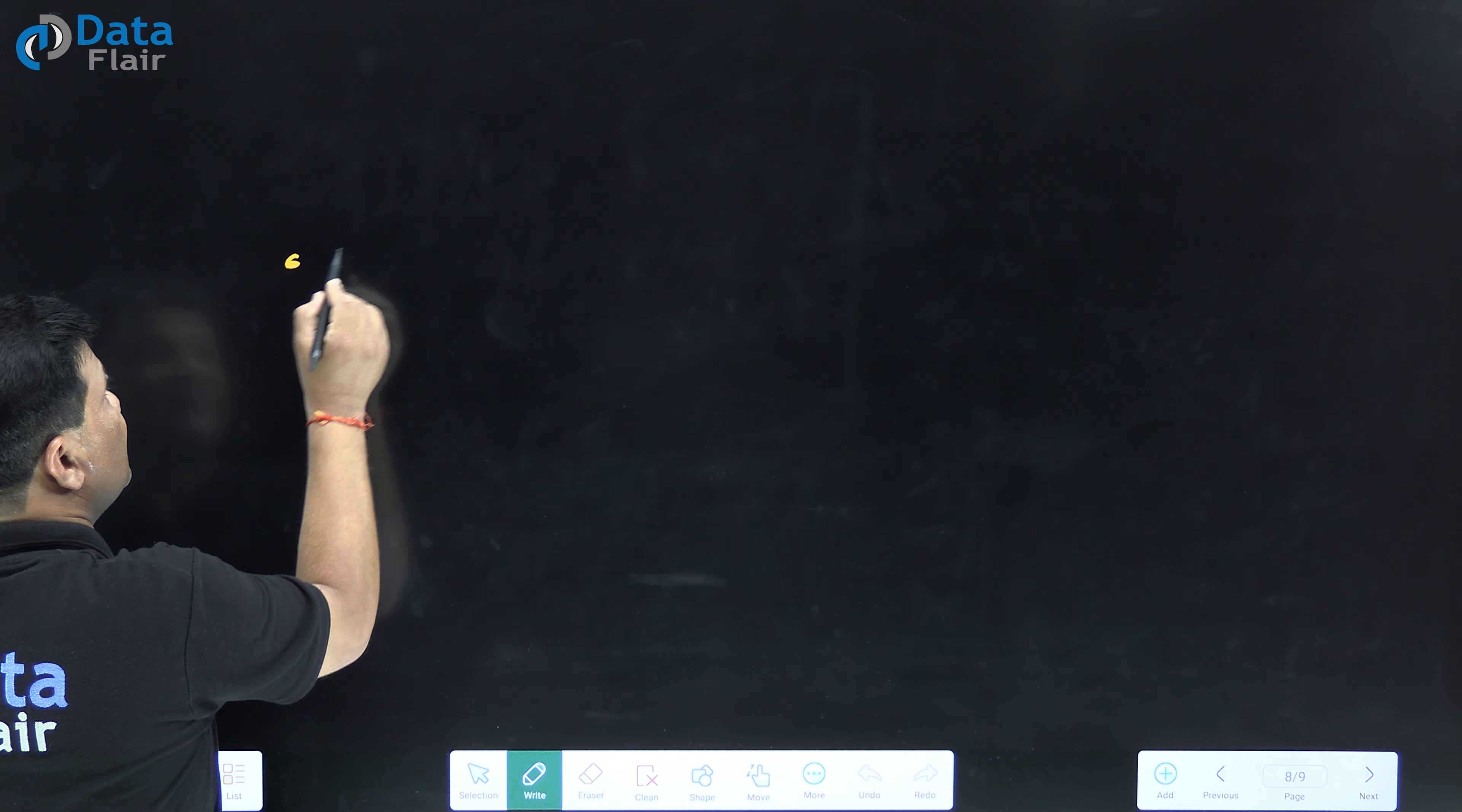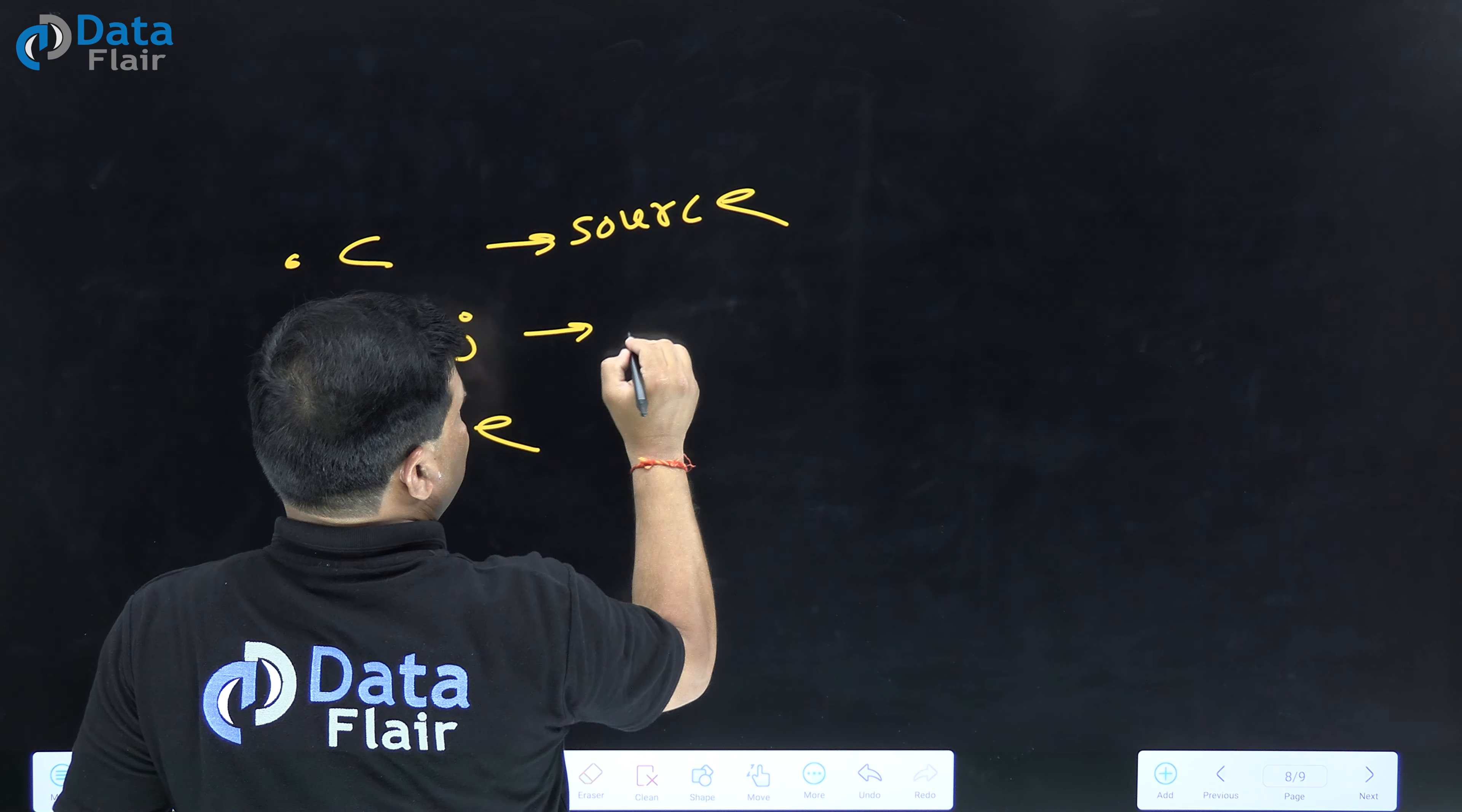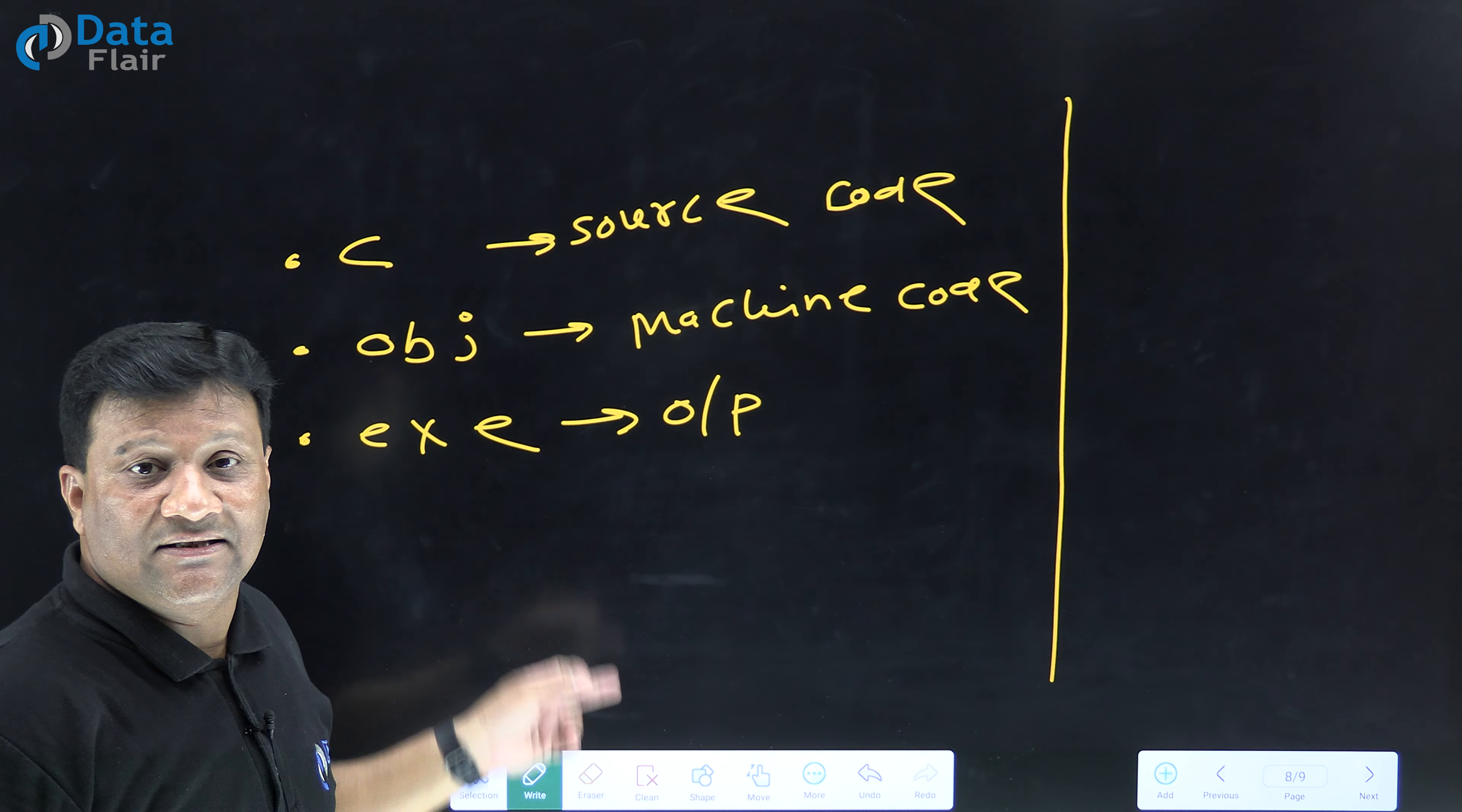C program creates .c file which contains source code, .obj which contains machine code, and .exe which contains output. So C has source code, machine code, and output file. When you write a C program, total how many files are created? Three: .c, .obj, and .exe.